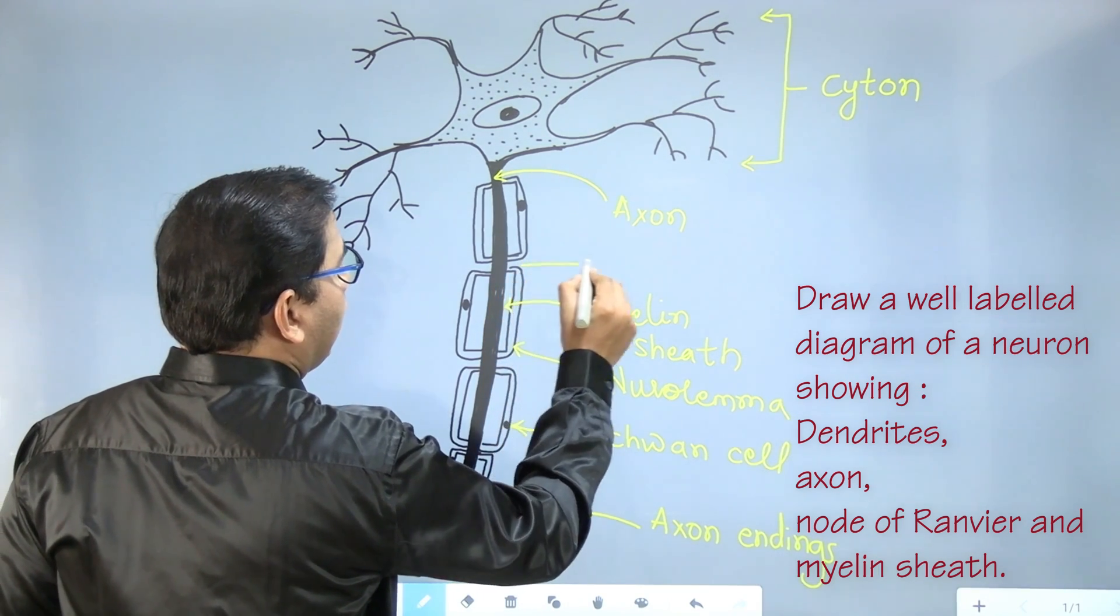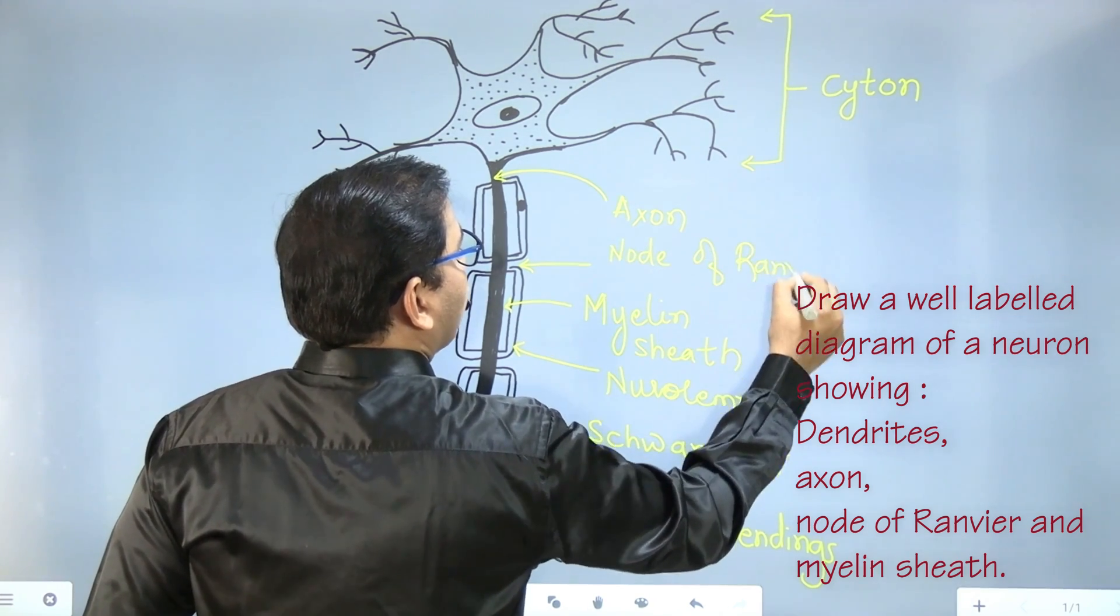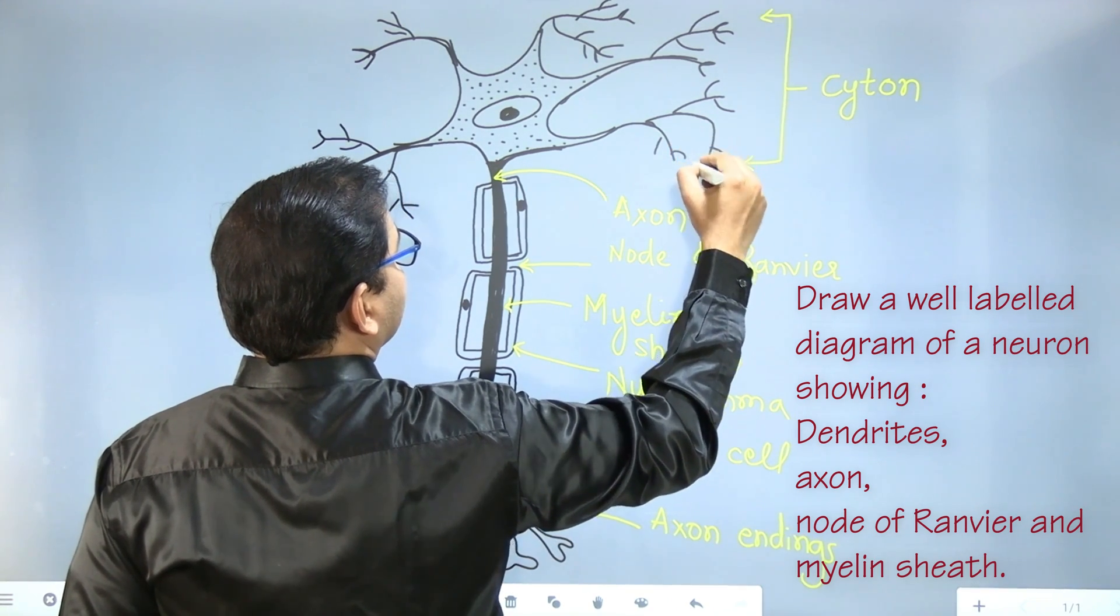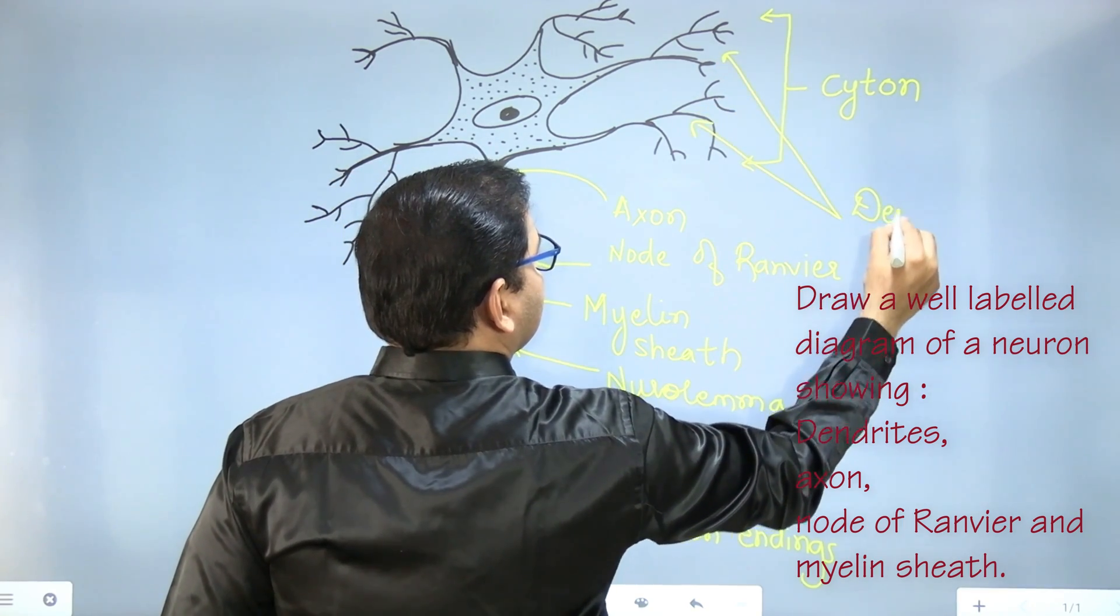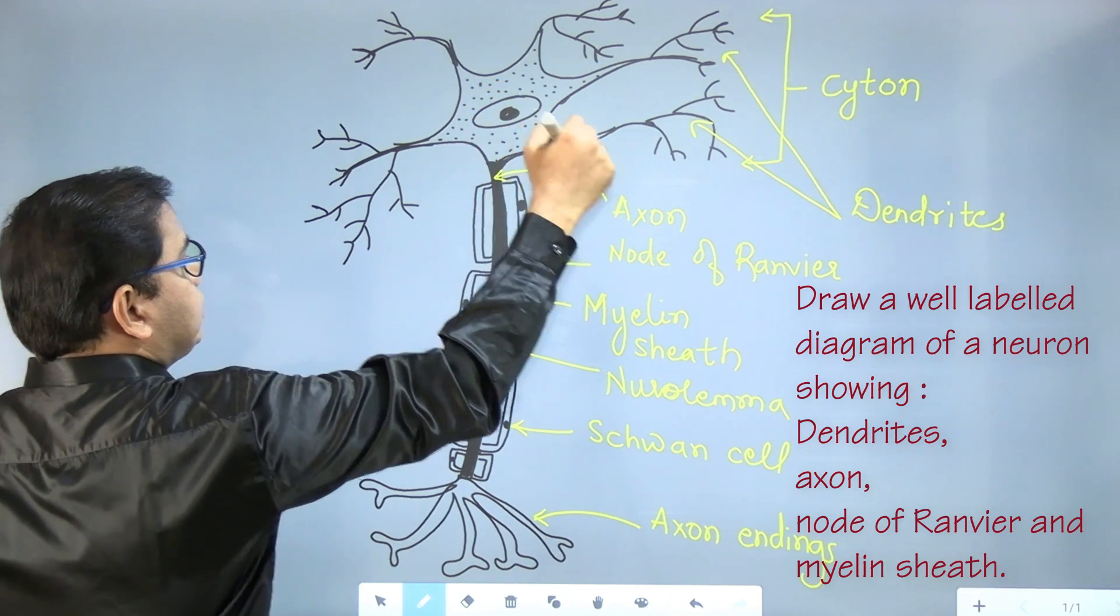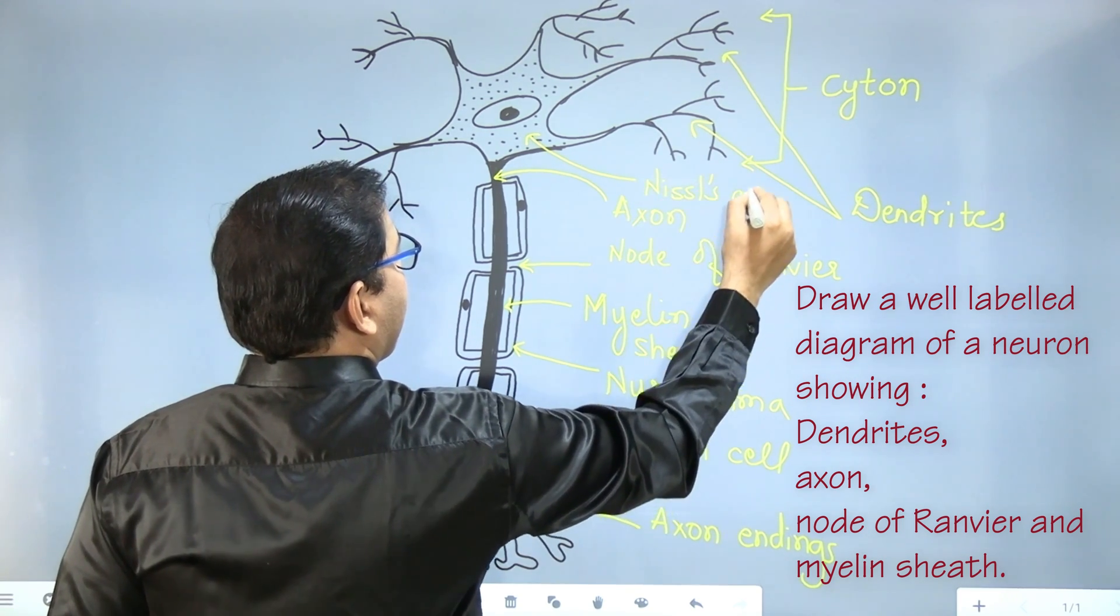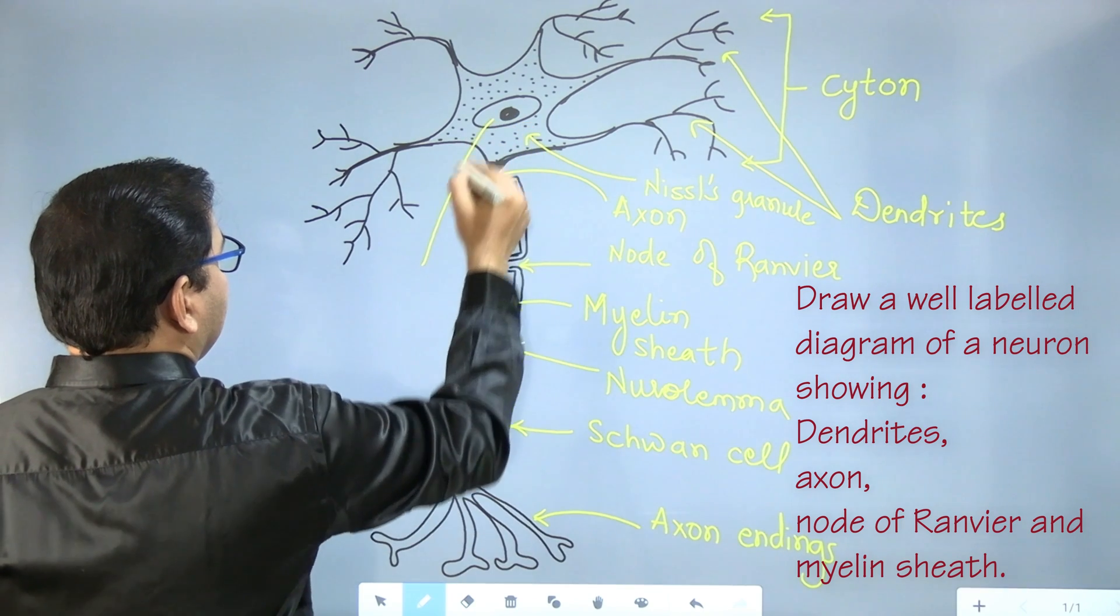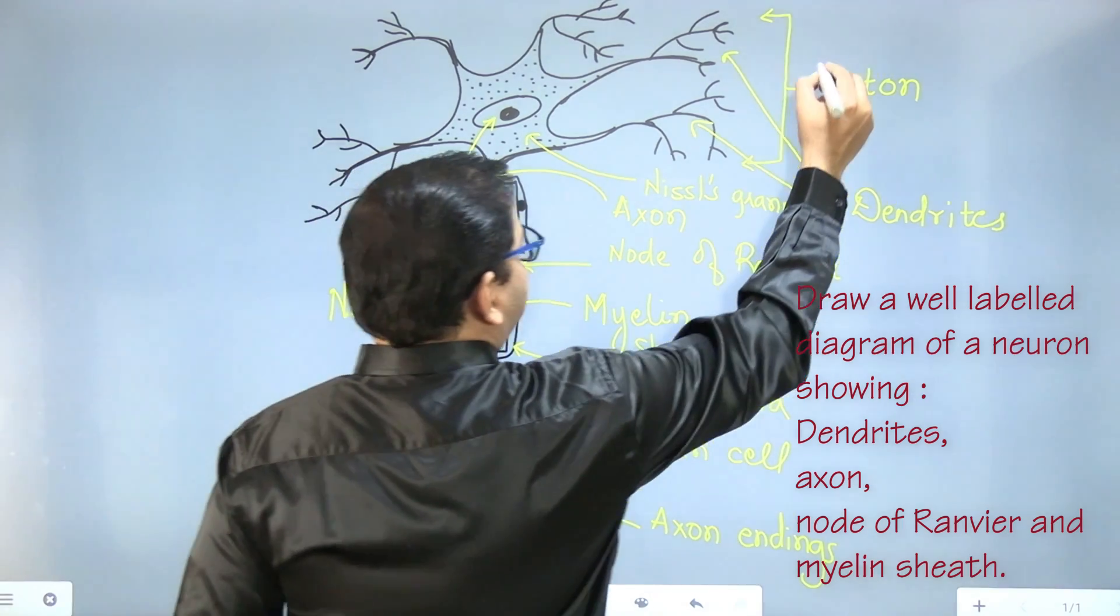And this Schwann cell is responsible for the production or the formation of the myelin sheath. A gap between two myelin sheaths is called node of Ranvier. And all these branches are called dendrites. And these dots are called Nissel's granule. And this part is the nucleus.